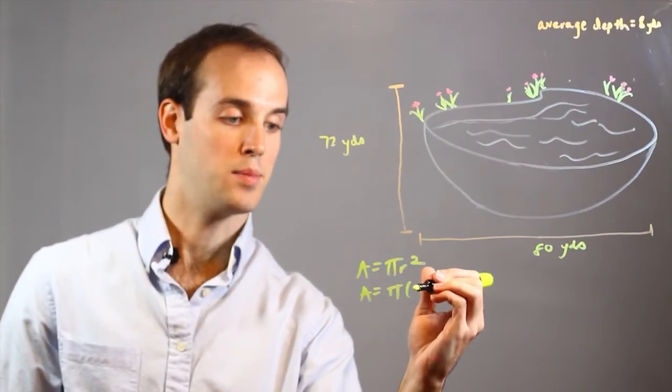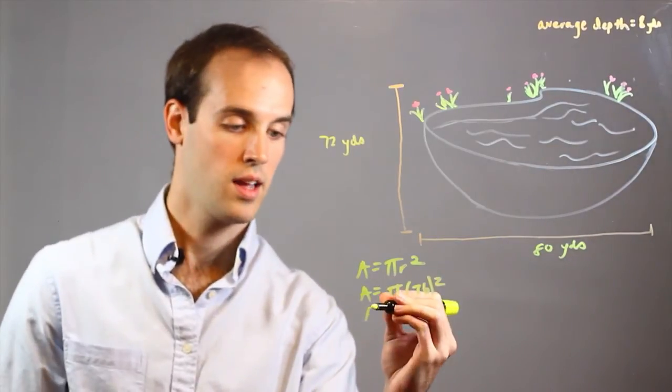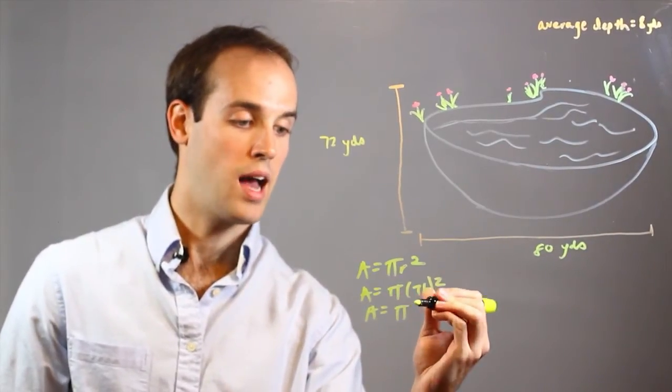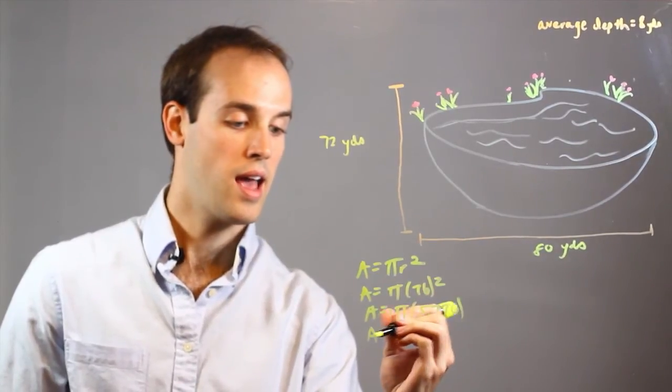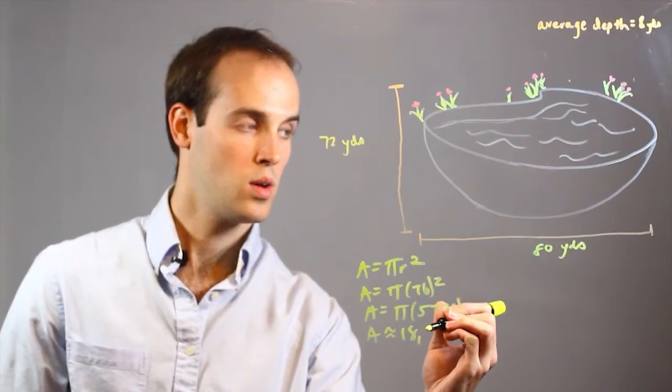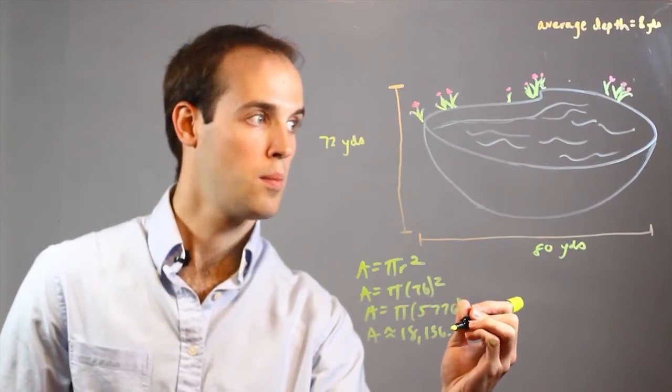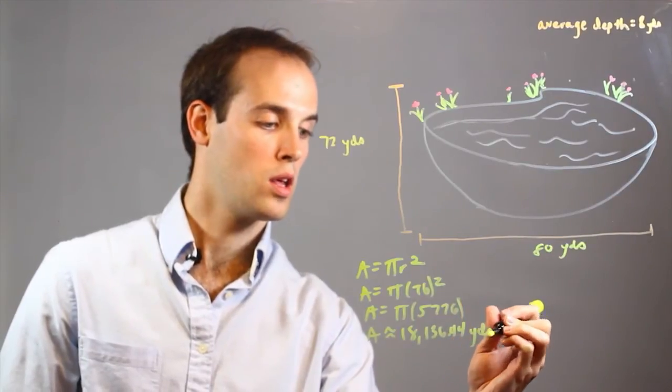A = π × 76². From there it's just solving: A = π × 5776, and A ≈ 18,136.44 square yards.